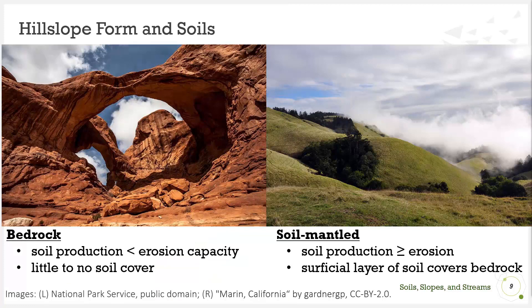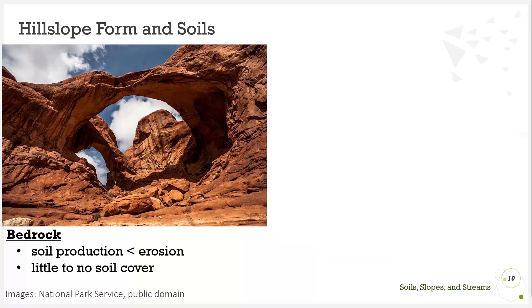When thinking about whether a landscape has soil at the surface or not, we have to consider the rate of soil erosion and the rate of soil production or weathering. The balance of weathering, soil production, and erosion controls what we see at the surface — bedrock is on the left, and soil as we see on the hills to the right. In the left-hand image, the landscape has a greater capability to erode than to weather and produce soil, resulting in little to no soil cover and the exposure of bedrock at the surface. Here, slope form is largely controlled by rock properties. One of the best known places to see this in action is the Grand Canyon.